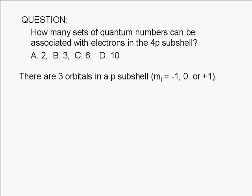There are three orbitals in any P subshell. These correspond to values of negative 1, 0, and positive 1 for the magnetic quantum number M sub L.